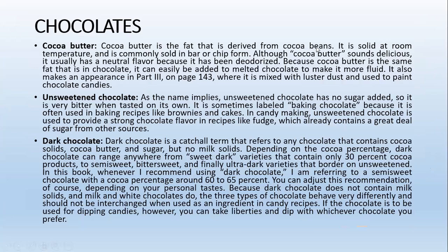Cocoa butter is a fat derived from cocoa beans. It is solid at room temperature and commonly sold in bars or chip form. Although cocoa butter sounds delicious, it usually has a neutral flavor because it has been deodorized. Because cocoa butter is the same fat found in chocolate, it can easily be added to melted chocolate to make it more fluid. Unsweetened chocolate, also called baking chocolate, has no added sugar and a bitter taste, but is used in making brownies and cakes. In candy making, unsweetened chocolate provides a strong chocolate flavor in recipes like fudge, which already contains a great deal of sugar from other sources.